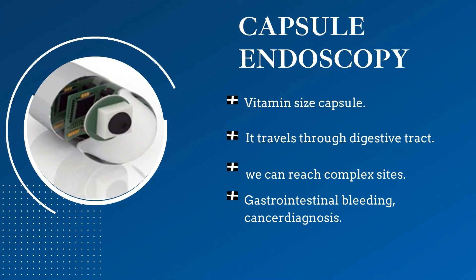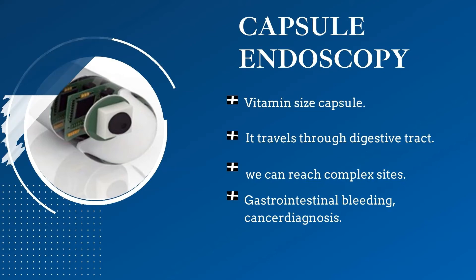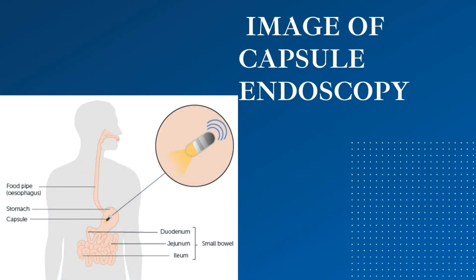Capsule endoscopy is a procedure that uses a tiny wireless camera to take pictures of your digestive tract. The camera sits inside a vitamin-sized capsule that you swallow. As the capsule travels through the digestive tract, the camera takes thousands of pictures transmitted to a recorder worn on a belt around your waist. It helps to view areas not easily reached and is mostly used for diagnosing gastrointestinal bleeding, cancer diagnosis, and polyp screening. This illustration shows how capsule endoscopy works inside the stomach.